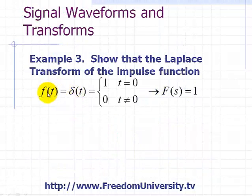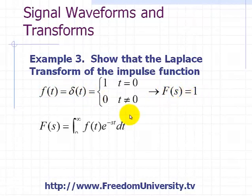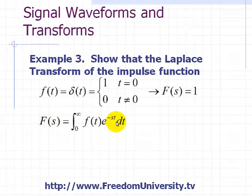Now, what we want to show is that the Laplace transform of impulse function is just simply F(s) is equal to 1. And here's our definition of our Laplace transform, f(t)e^(-st)dt, and then we'll just simply substitute delta(t) into our definition.